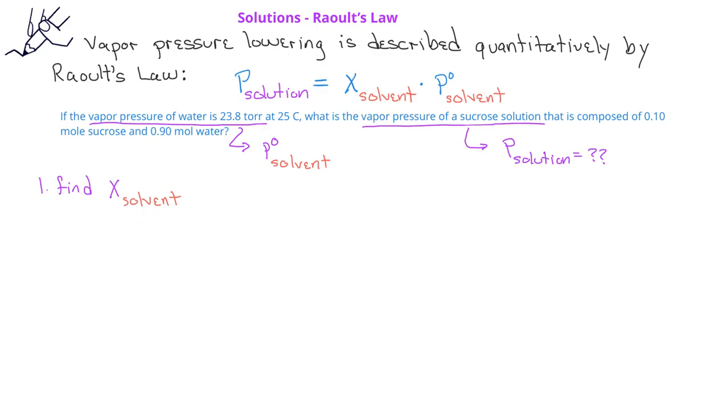You calculate it the same way except using the moles of the solvent in the numerator. In this case, the mole fraction of the water would be given by 0.90 moles of water in the numerator divided by 0.90 moles of water plus 0.10 moles of sucrose. This gives us a mole fraction of the solvent, water, of 0.90.